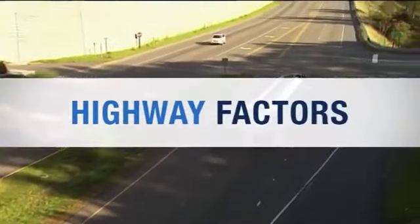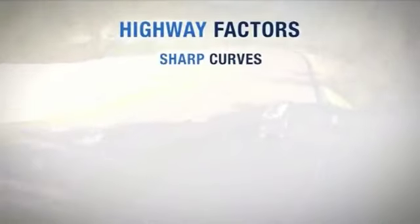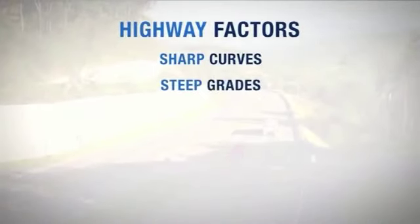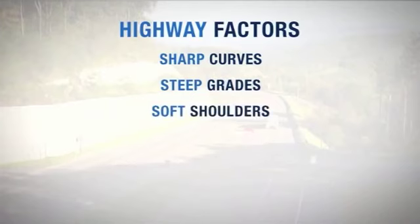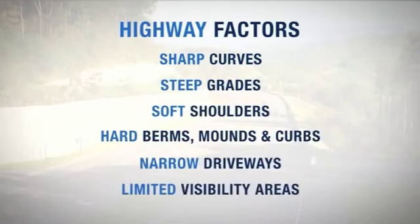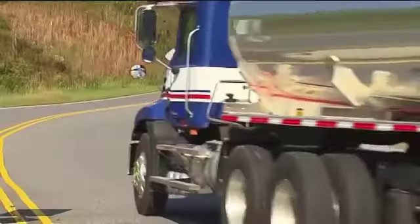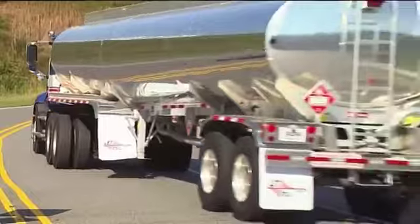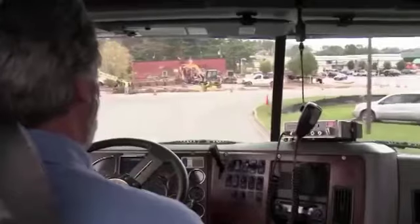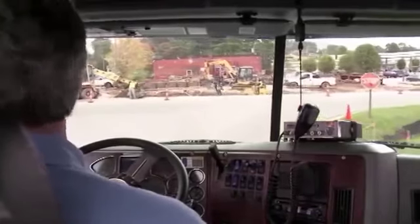Now let's look at potential highway factors. These include sharp curves, steep downhill grades, soft shoulders, berms, mounds and curbs, narrow driveway entrances or exits, and limited visibility areas that can reduce lead time for turns or hills. It's important to survey and identify high-risk sections of regularly traveled routes.